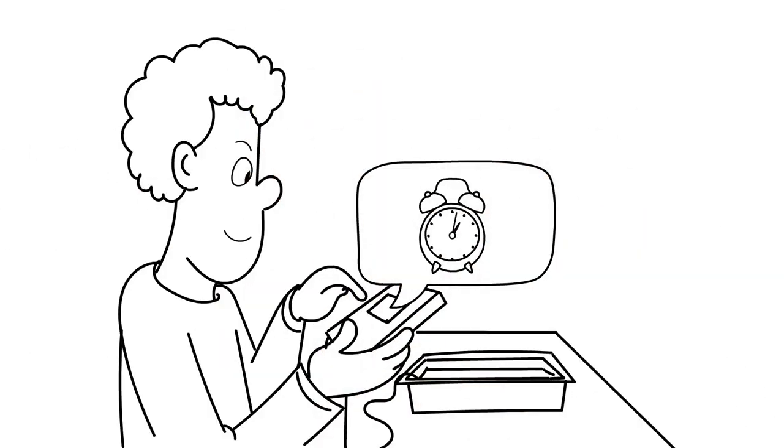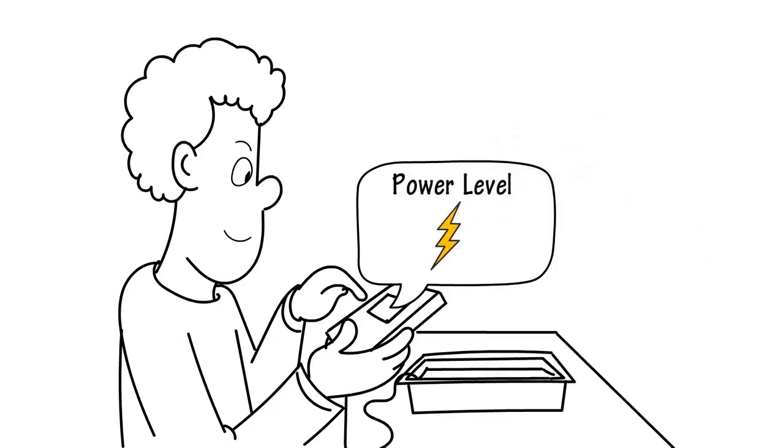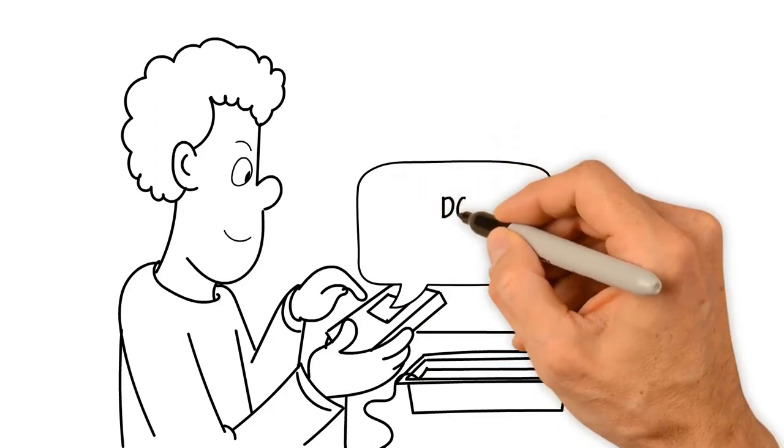Step 8: Set the treatment timer. Step 9: Set your power level. Step 10: Set the current to direct current.